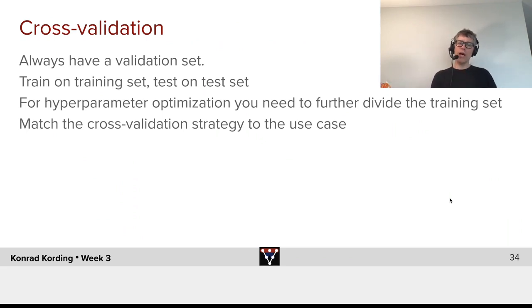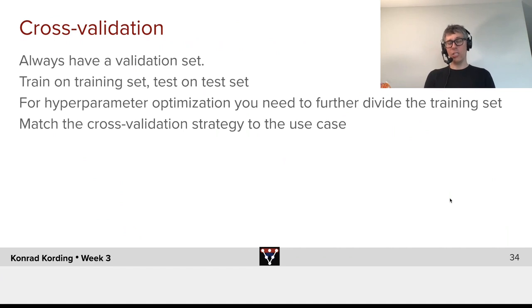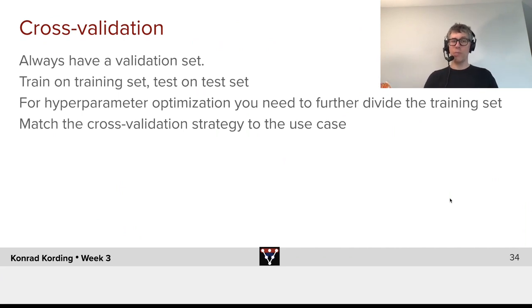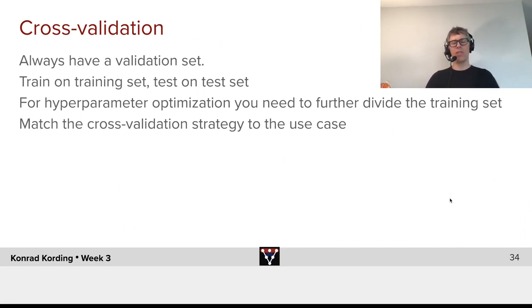If you want to do hyperparameter optimization, you should always do that on an extra validation set. You need to take your training set and divide it into pieces, and do hyperparameter selection on those pieces. The other important thing is you need to match your validation strategies to the use case.